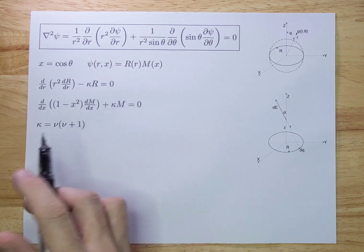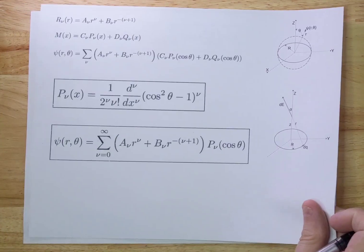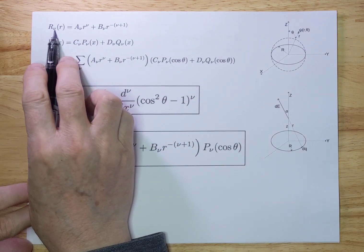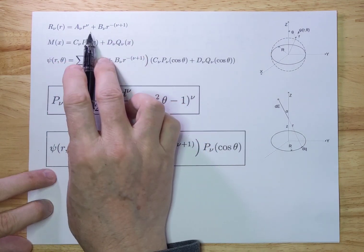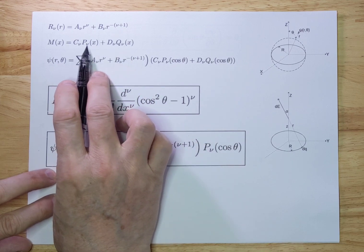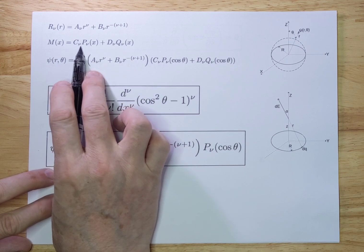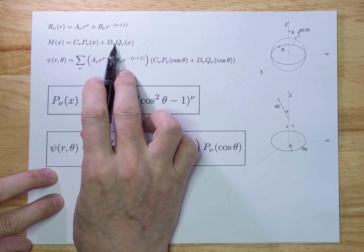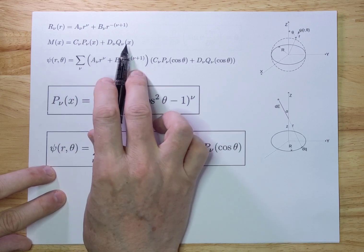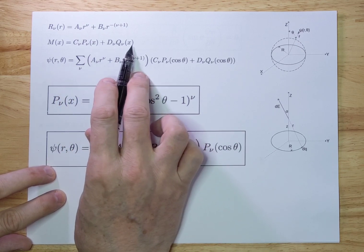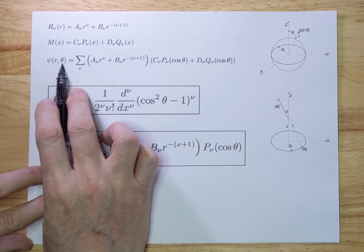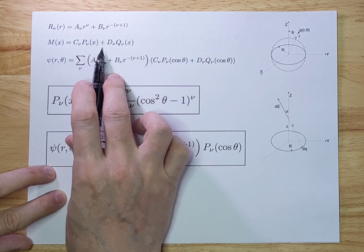These two equations can in fact be solved. When you solve them, you get a solution in R, which is essentially a polynomial type of solution. And you get a solution as a function of x — there's a C_nu times P_nu(x), and a D_nu times Q_nu(x) function. We don't know how these functions look yet, but they are quite complex functions.